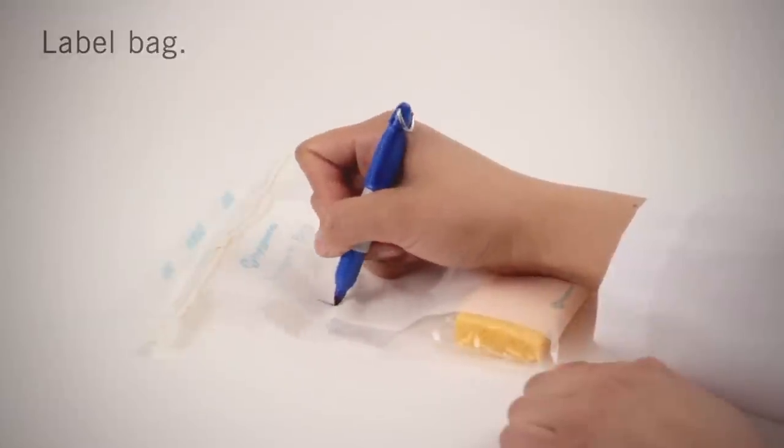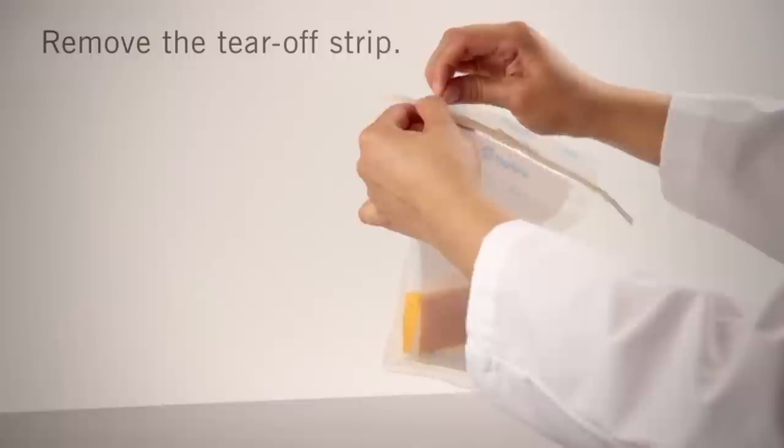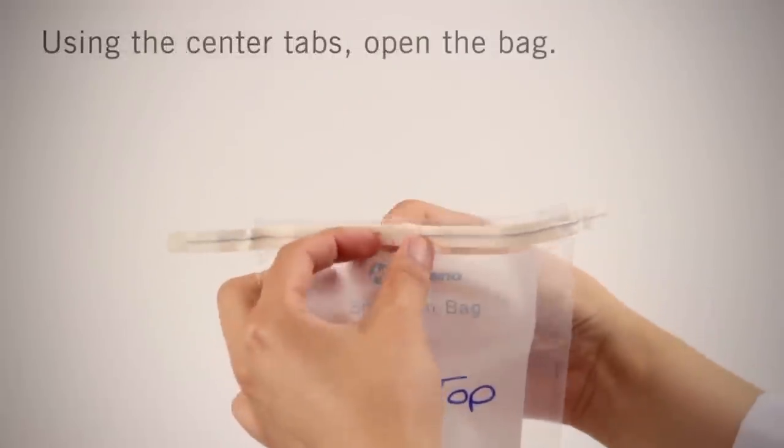Label the sample bag with permanent marker for identification. Remove the tear-off strip. Using the center tabs, open the bag.